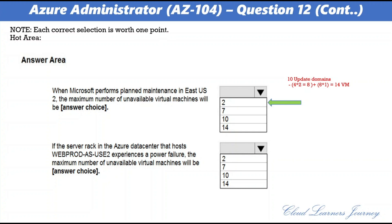Second answer: if the server rack in the Azure datacenter hosting webprod-as-use2 experiences a power failure, the maximum number of unavailable virtual machines will be 7. There are 2 fault domains. The 14 VMs are shared across the 2 fault domains, giving 7 VMs in each. A rack failure affects 1 fault domain, so 7 VMs will be offline.